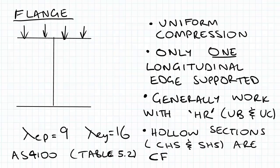So the first scenario we have is the flange is undergoing uniform compression, as we can see in this diagram, and only one longitudinal edge is supported, as we can see here. Generally when we are doing these calculations, we work with UB and UC sections, and they're usually hot rolled.